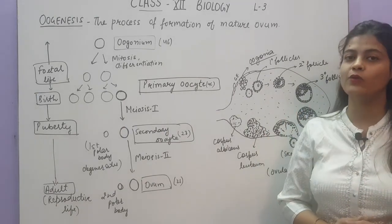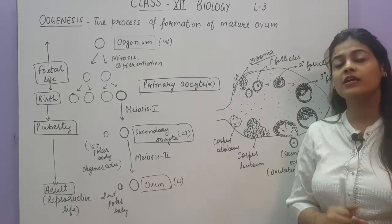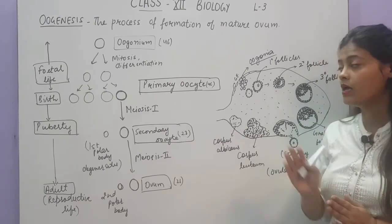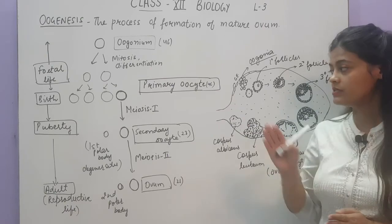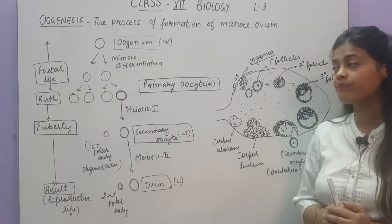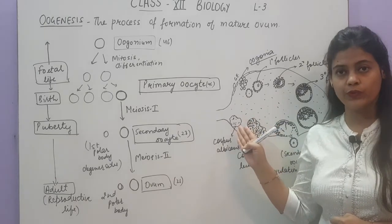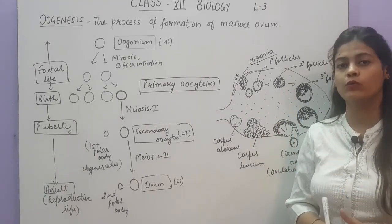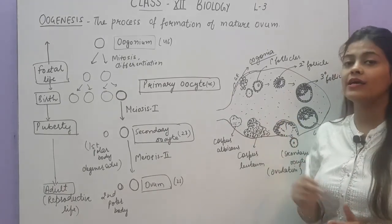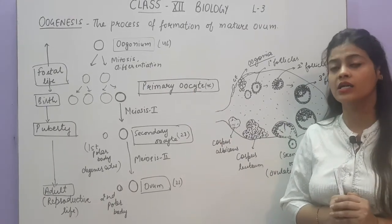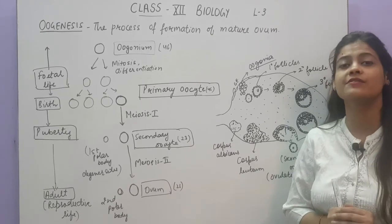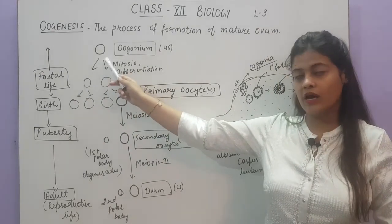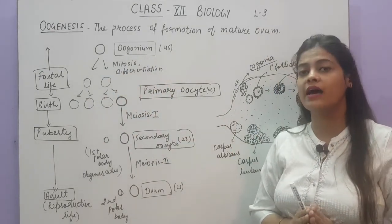There is an interesting fact about oogonia. When the development of a female fetus takes place, the ovary also develops. At that time, the number of oogonia is decided — all the oogonia that will ever be in the ovary are established then. They are present in millions. So millions of oogonia are developed in the ovary of the female during its fetal life, and the number of oogonia is fixed at that point.